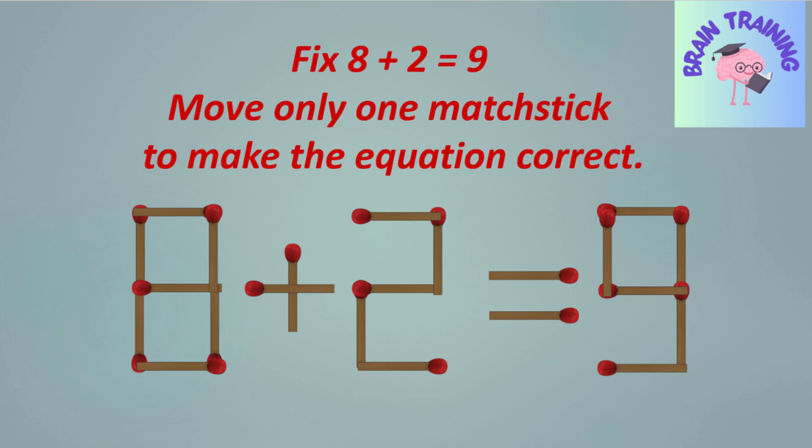The current equation is 8 plus 2 is equal to 9, and it's easy to spot the mistake.